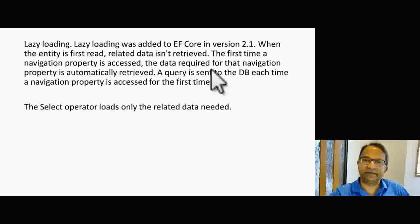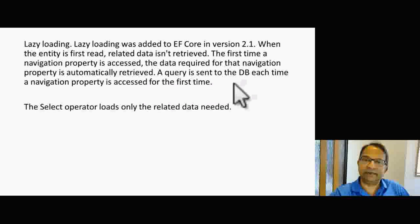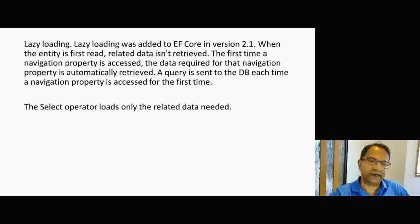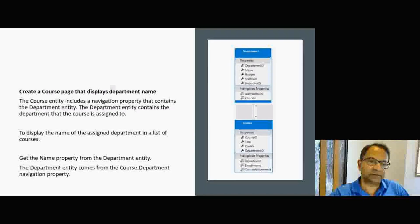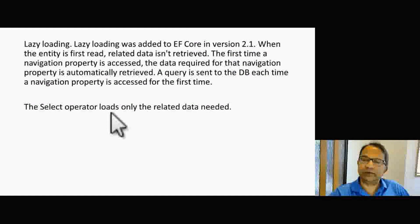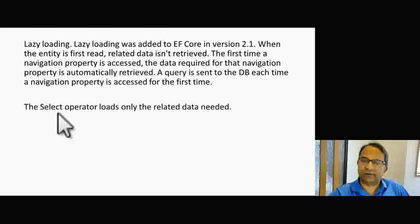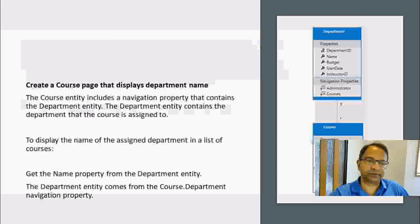Lazy loading was first added in EF Core version 2.1. When the entity is first read, related data is not retrieved. The first time a navigation property is accessed, the data required for that property is automatically retrieved — a query is sent to the database each time a navigation property is accessed for the first time. The select operator loads only the related data needed. You can read about the select operator in the Microsoft documentation linked in the video description.